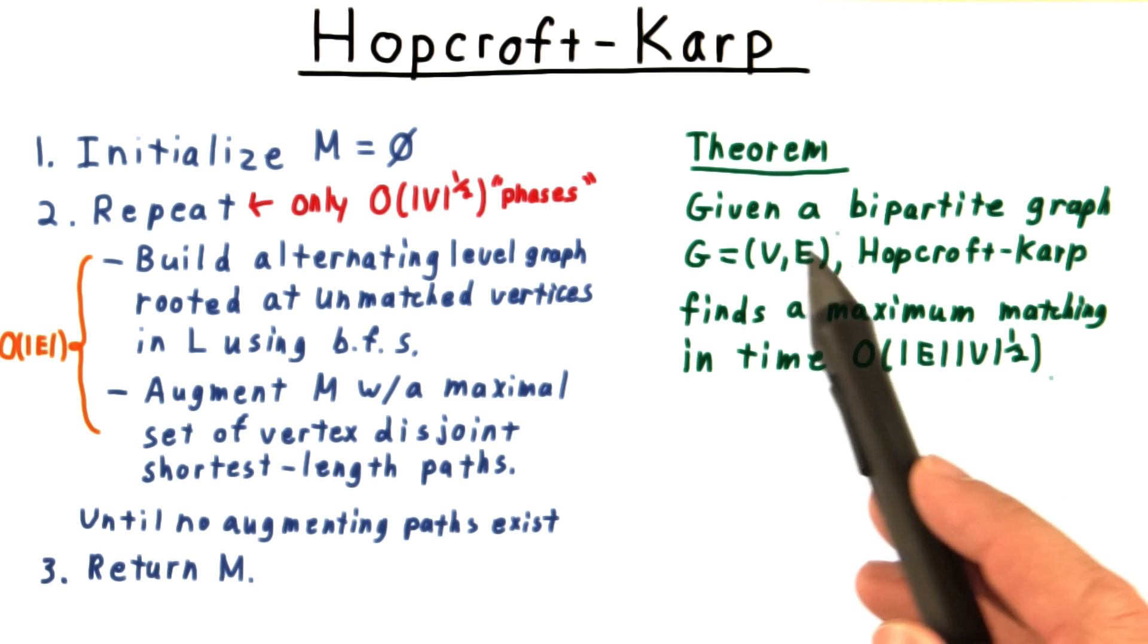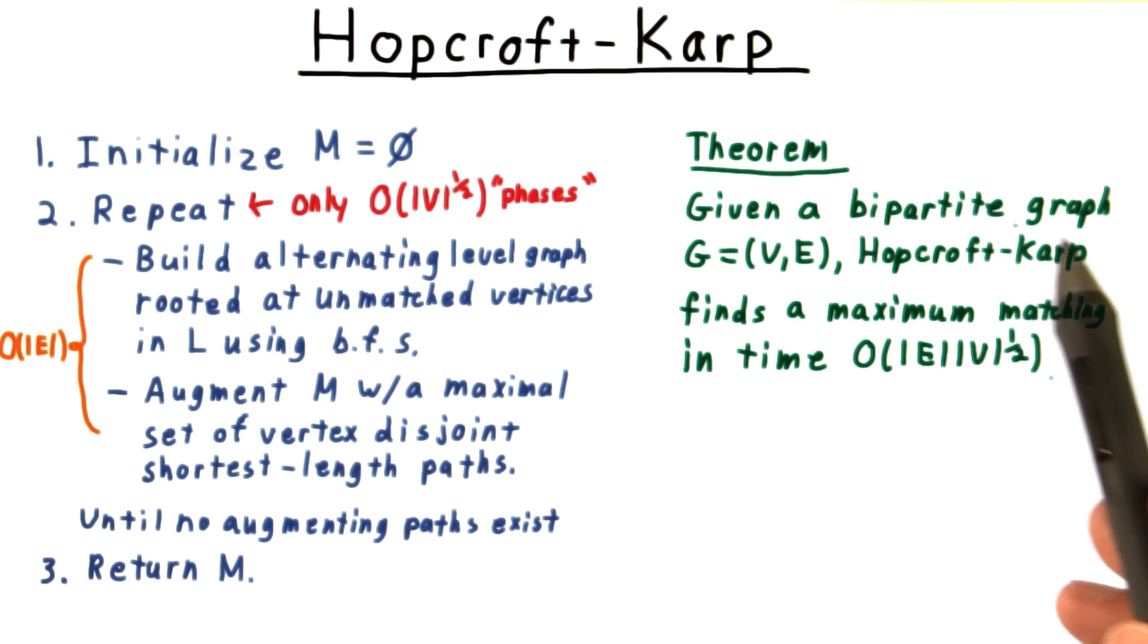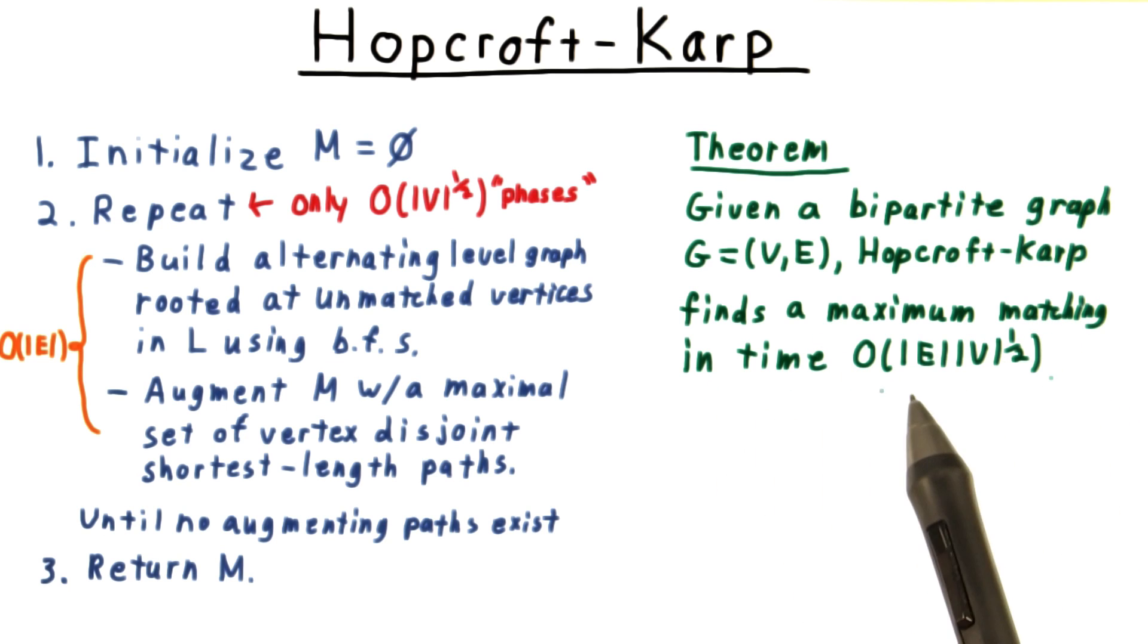Overall then, we seek to prove the theorem stating that given a bipartite graph, the Hopcroft-Karp algorithm finds a maximum matching in time order e times the square root of v.